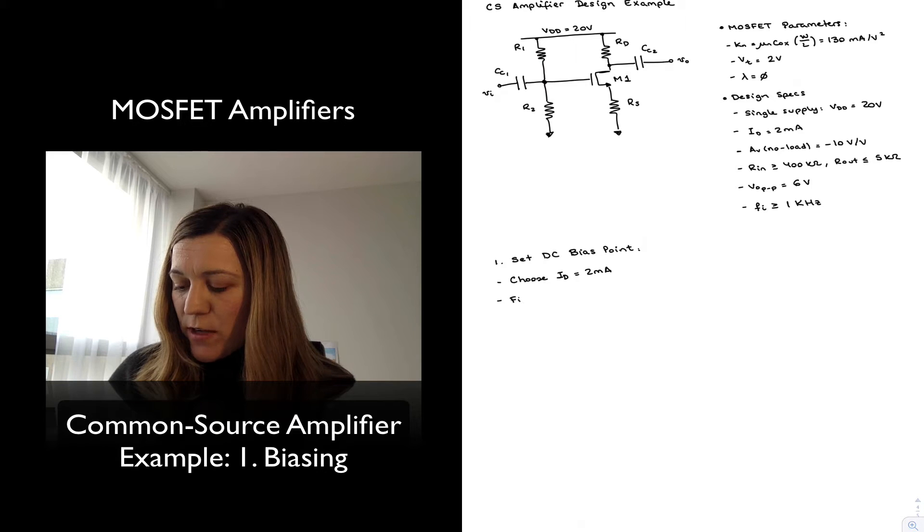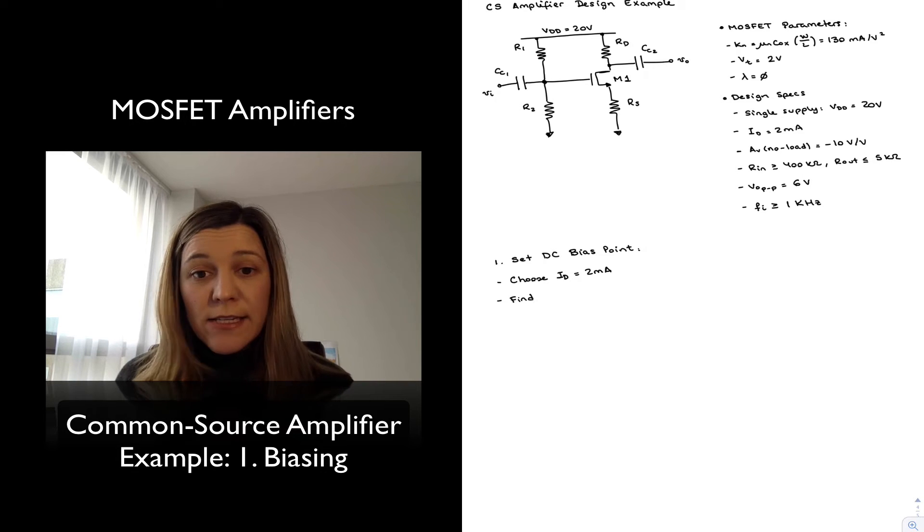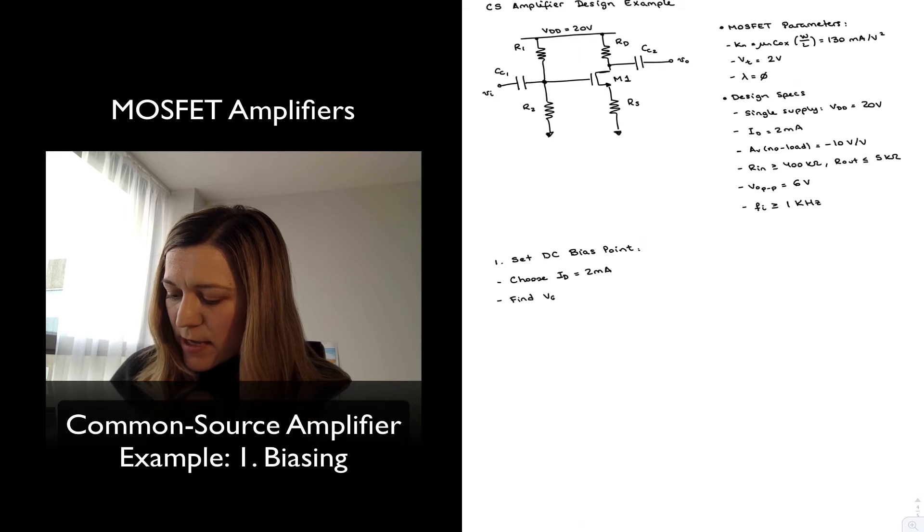Then I'm going to need to find the right value of VGS in order to set that drain current. As we know, the drain current is related to VGS through the quadratic equation, so I'm going to find VGS.